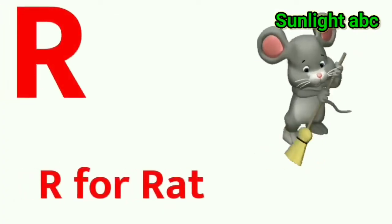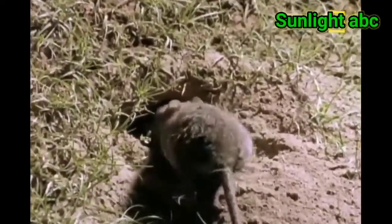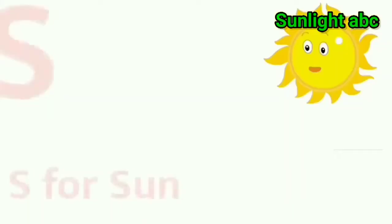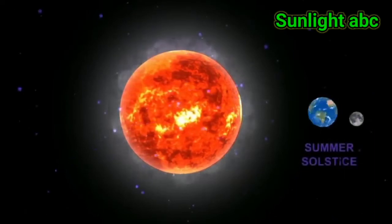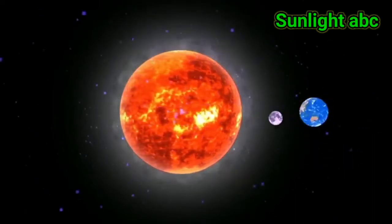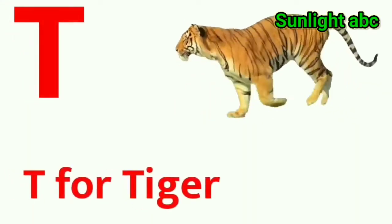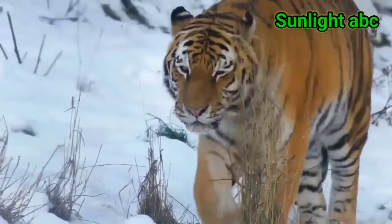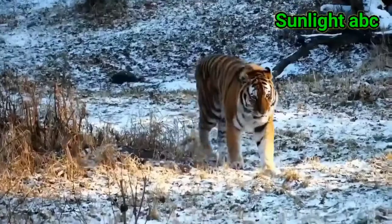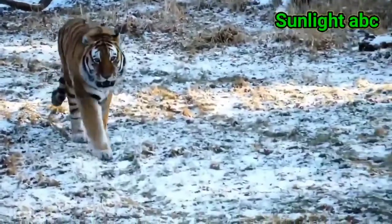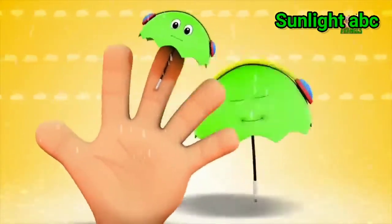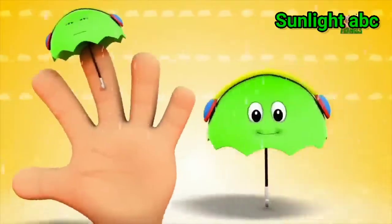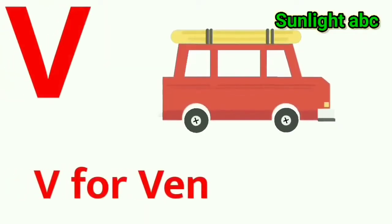R for Red. S for Sun. T for Tiger. U for Umbrella. V for Van.